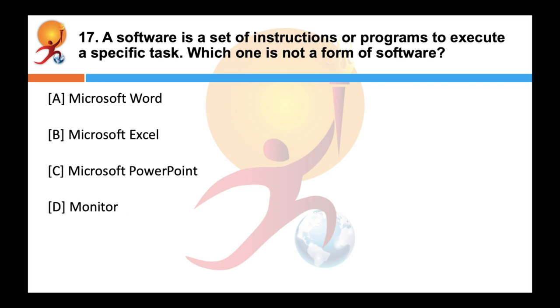A software is a set of instructions or programs to execute a specific task. Which one is not a form of software? Correct answer is D-Monitor.